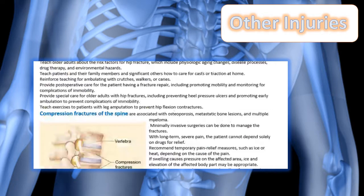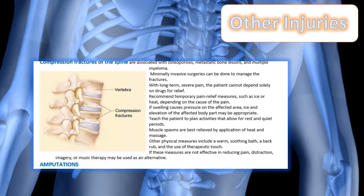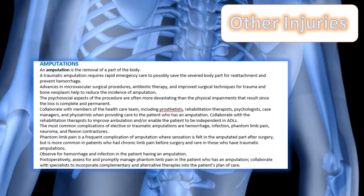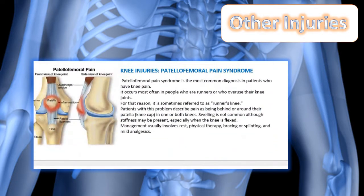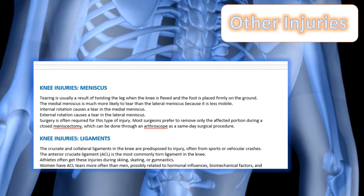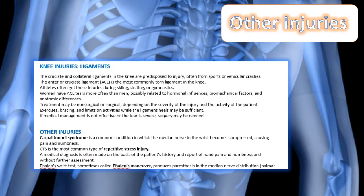Knee injuries are also covered — make sure you review those. Meniscus injuries are also discussed; tearing is usually the result of twisting the leg when the knee is flexed and the foot is firmly on the ground. You may also tear ligaments as part of these injuries.